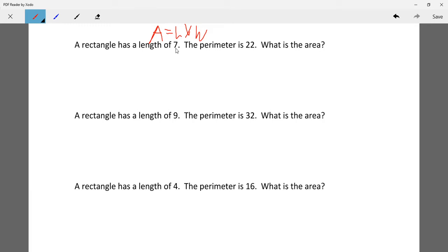So just know that, if they give you one dimension, either length or width, it's exactly the same. So we have a rectangle has a length of 7, and the perimeter is 22. What is the area?